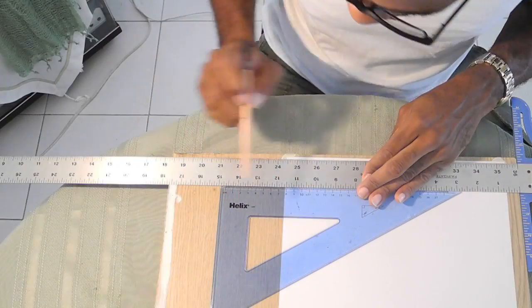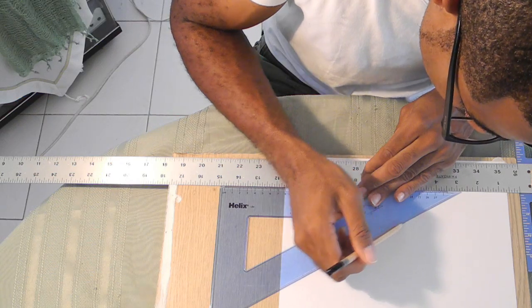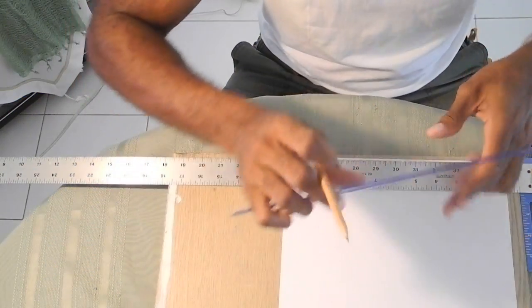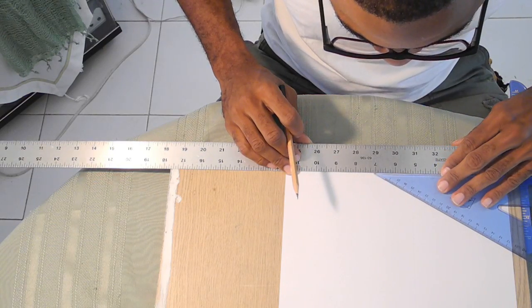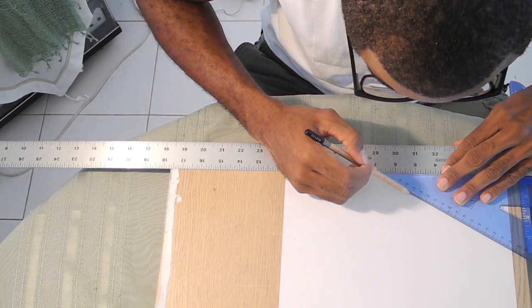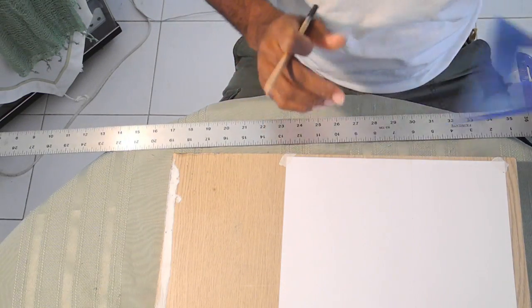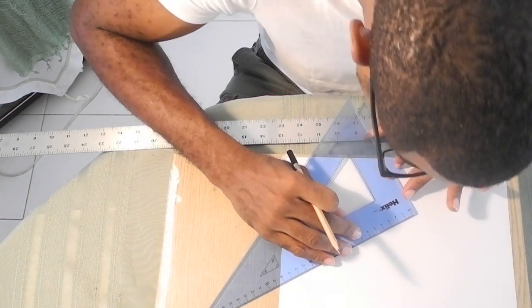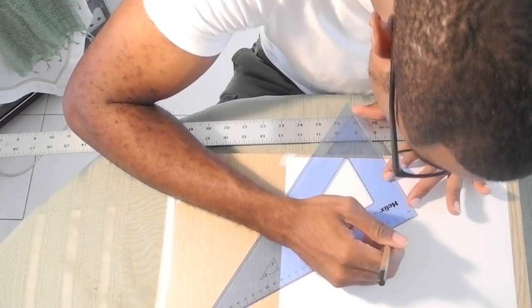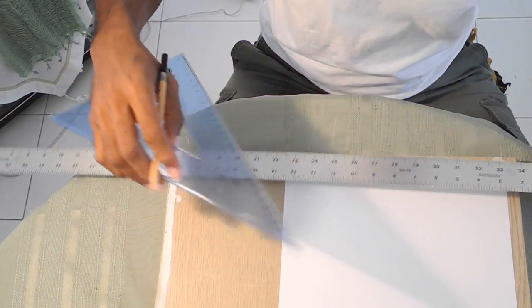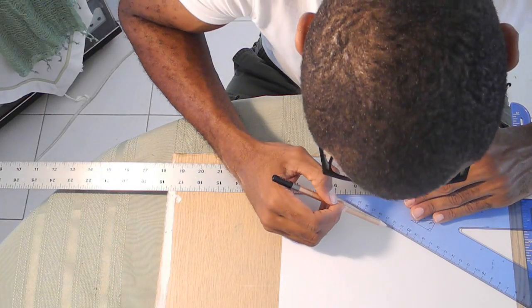I'm going to use the back of my set square and 30 degrees side. And we have marked off the 30. And I'm going to come mark off 30. This can also be done with a compass too.